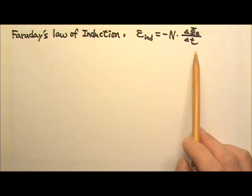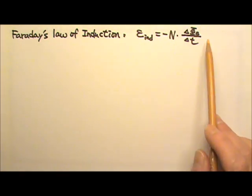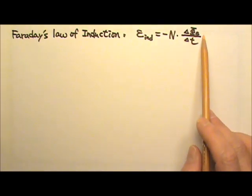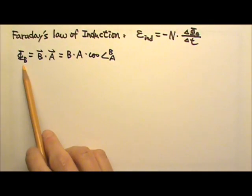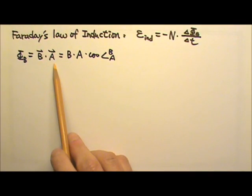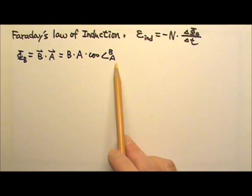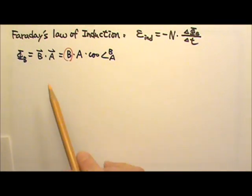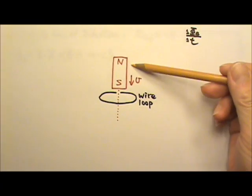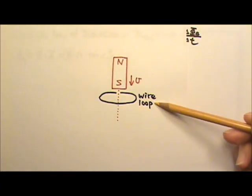According to this equation, to produce an induced EMF, we have to have a change in the magnetic flux. Since the magnetic flux is B dot A, which equals B times A times cosine of the angle between B and A, to change magnetic flux we can change the magnetic field B by, for example, pushing a magnet into or pulling it out of a wire loop.